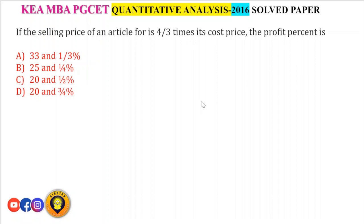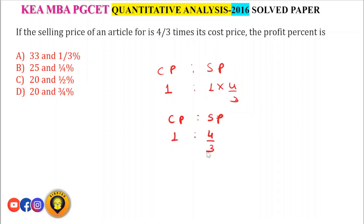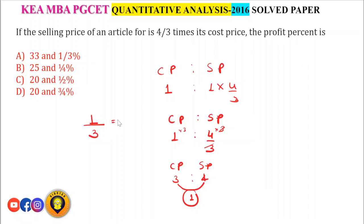If the selling price of an article is 4/3 times its cost price, the profit percentage is: CP:SP ratio = 1 : 4/3. Multiplying both by 3: CP = 3, SP = 4. Profit = 1 unit. Profit% = 1/3 = 33.33% or 33⅓%. Answer is option A.